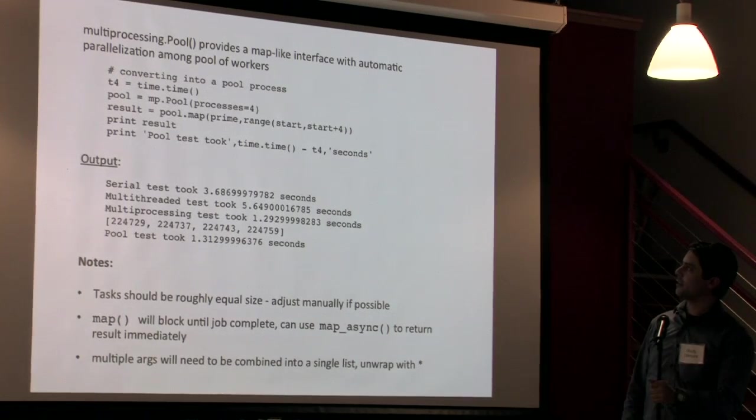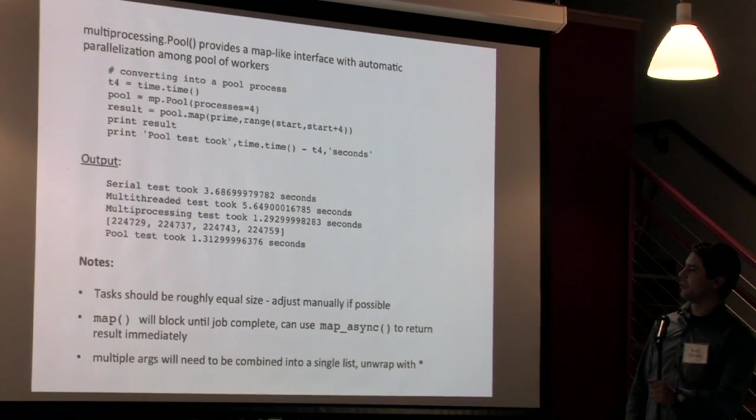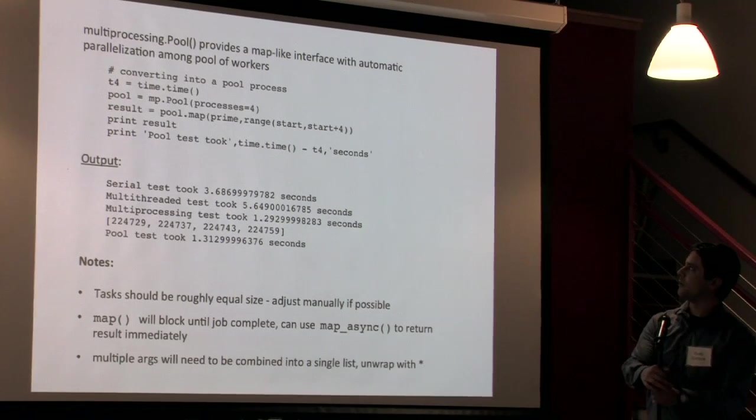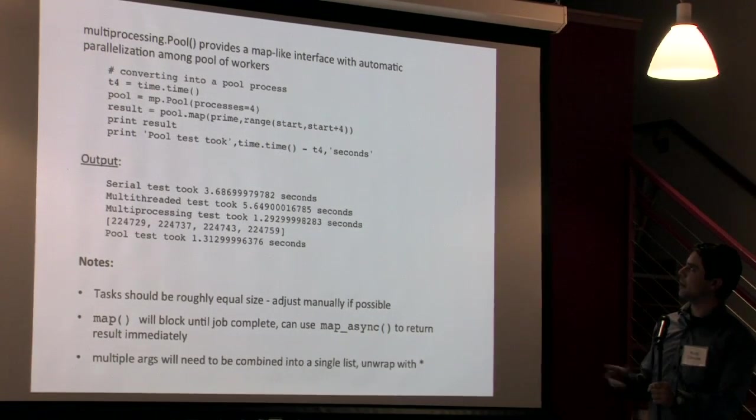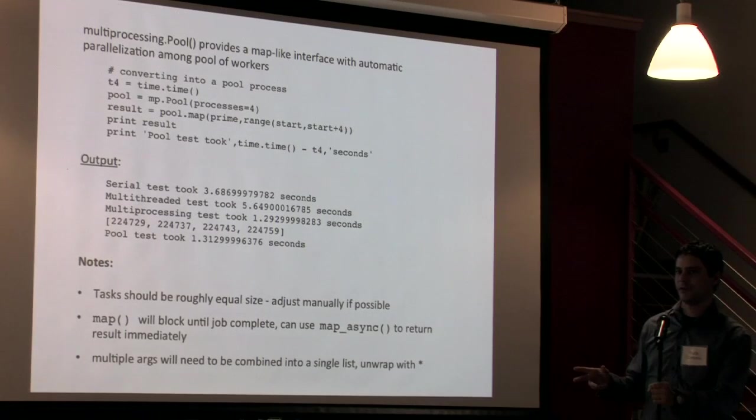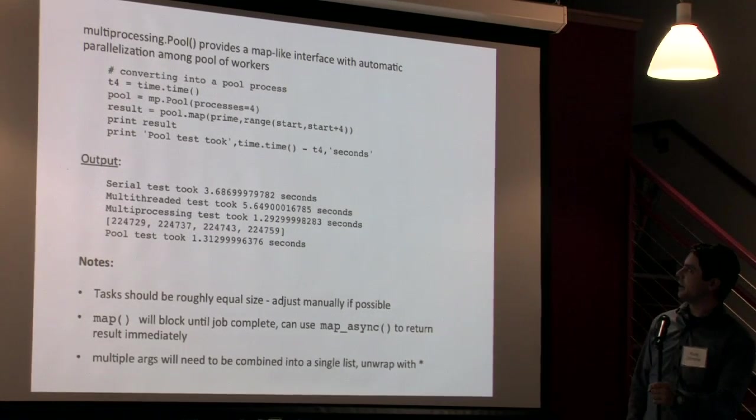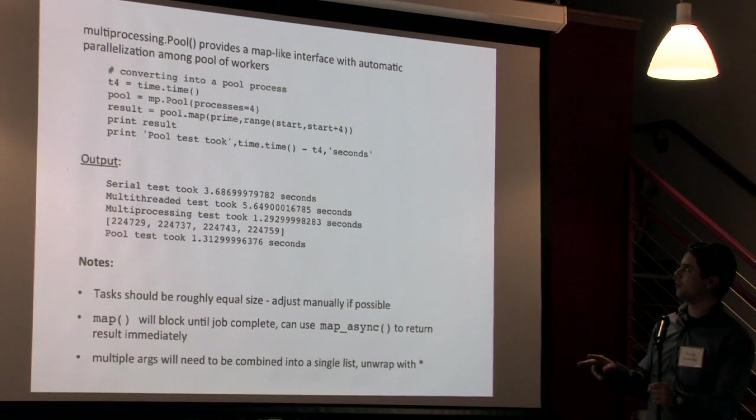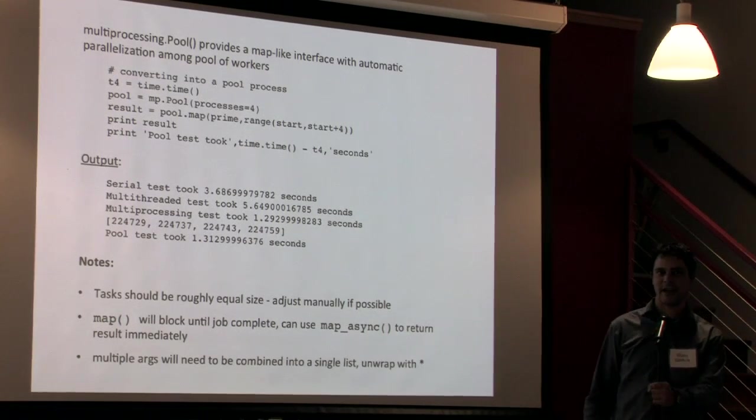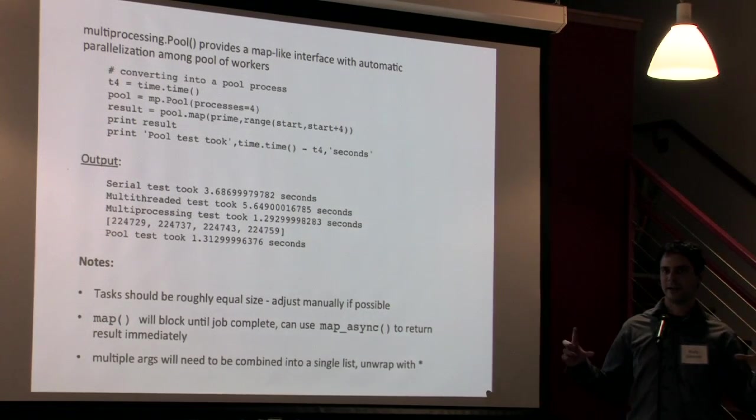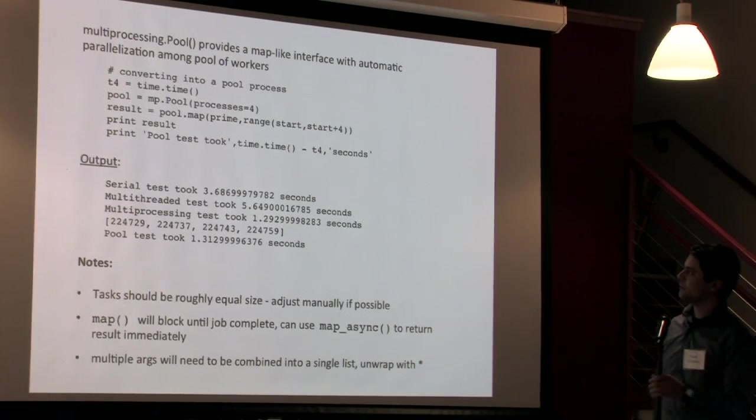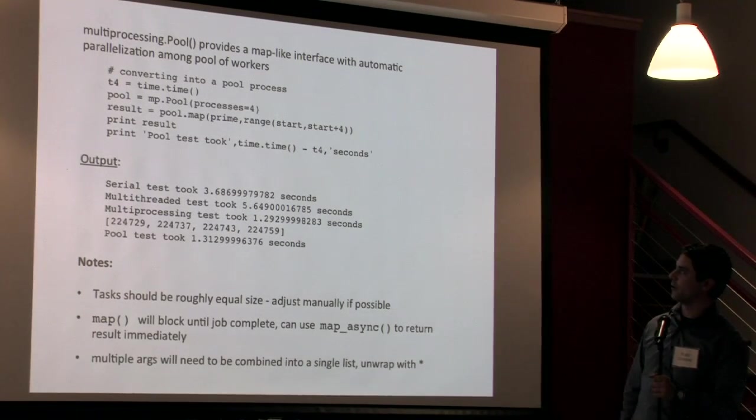So another part of the multi-processing module that's actually really useful and the one I want to emphasize here is multi-processing pool. And what this does is it gives you basically a map-like interface to tasks that you want to complete and it utilizes automatic parallelization among a pool of workers. The idea of this is you can hand off an array of tasks that you want to complete to your CPU and it'll automatically distribute these out among the workers.